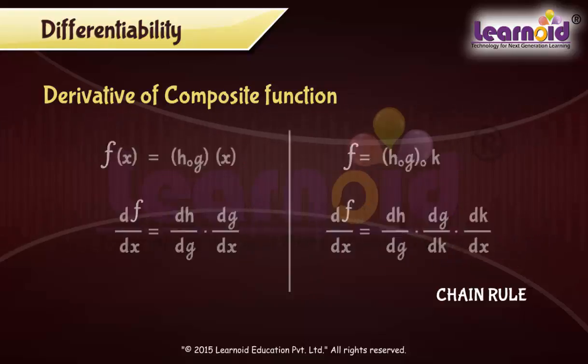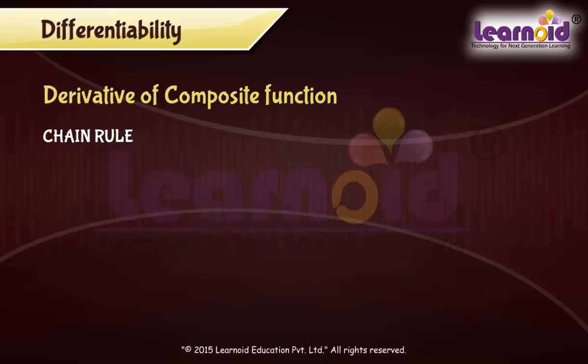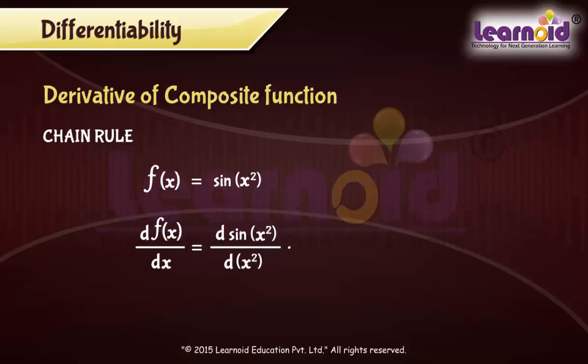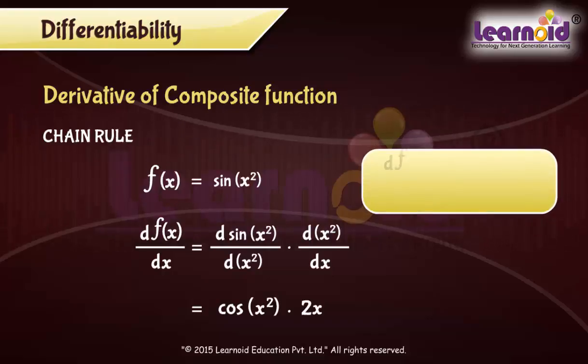Let us take an example to understand chain rule. Let f(x) equals sin(x²). f(x) is a composite function of two functions: sin and square. Using chain rule, we can write df/dx equals d sin(x²) by d(x²) multiplied by d(x²) by dx. d sin(x²) by d(x²) equals cos(x²), and d/dx of x² is 2x. So df/dx equals 2x cos(x²).